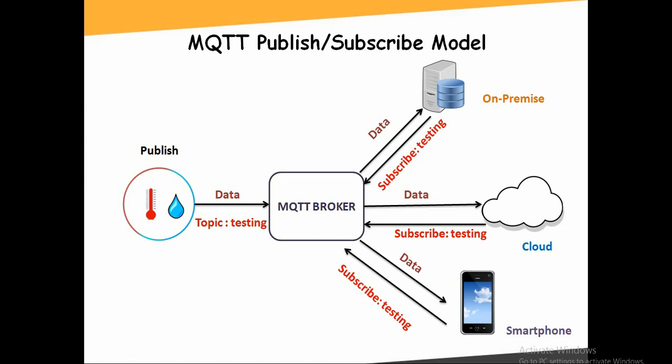In this diagram, data is subscribed by three things: on-premise, cloud, and smartphone. You can have any number of subscribers — I've only shown three here. The publisher and subscriber must use the same topic name to receive the data. If a publisher publishes on topic 'testing', the subscriber must also use the topic 'testing' to receive that data.